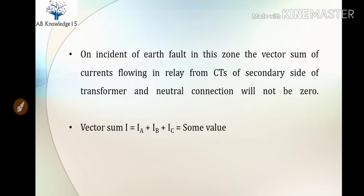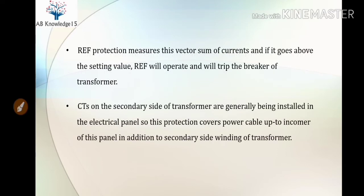On the incident of an earth fault in this zone, the vector sum of currents flowing in the relay from the CTs of the secondary side and the neutral connection will no longer be zero. The vector sum I equals Ia plus Ib plus Ic will have some non-zero value. Upon this value, the relay of REF protection will sense that there is an earth fault in the zone. REF protection measures this vector sum of currents, and if it goes above the setting value, REF will operate and trip the breaker of the transformer.